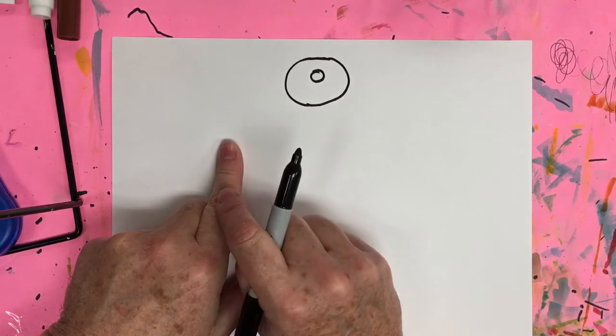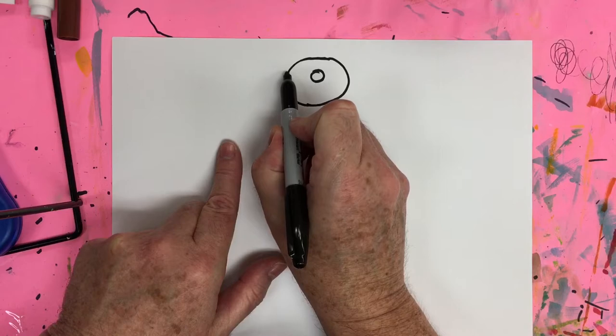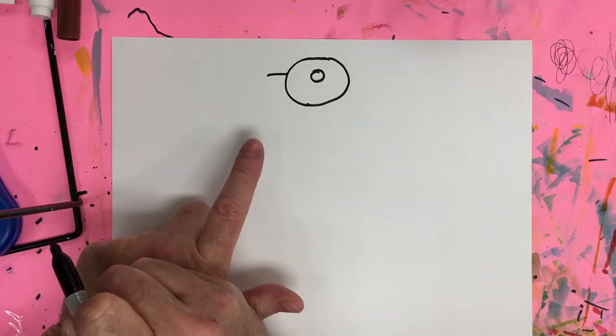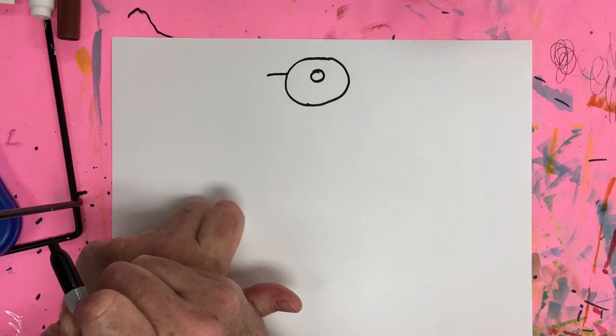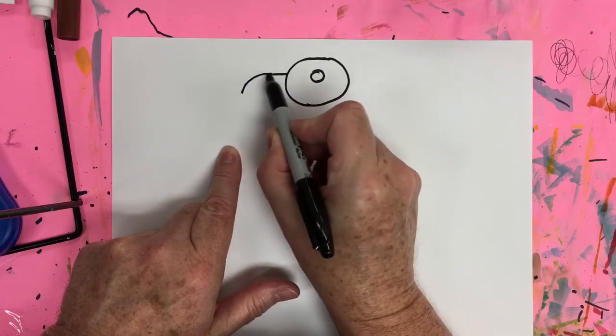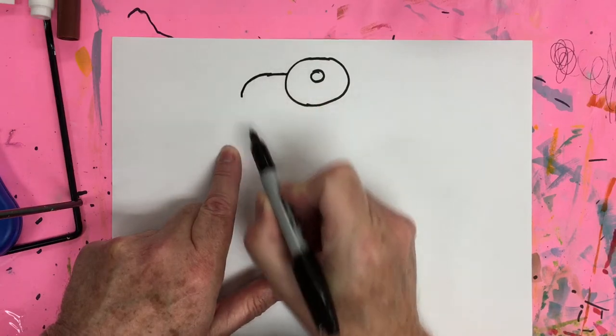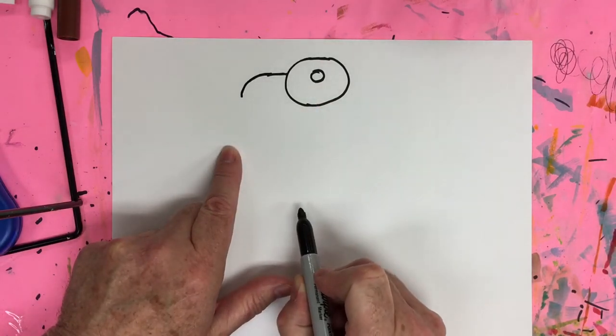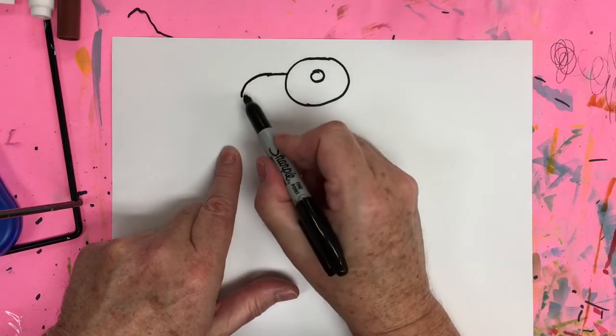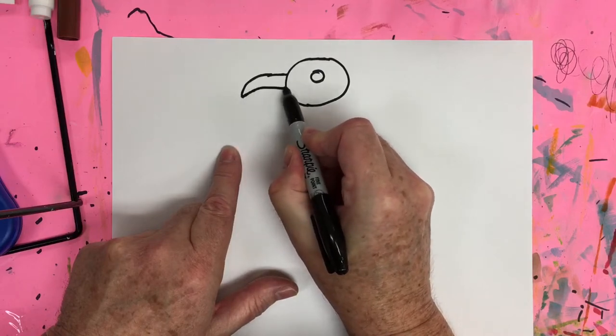Now we're going to do the Thunderbird beak. We're going to come to this edge of the circle and come out straight, just a short line. They say that the Thunderbird is in the likeness of an eagle, one of the greatest birds. So I'm coming down like an eagle beak, a sharp beak, coming out and slowly down. The Thunderbird symbol is just made with simple geometric shapes and lines. Now I'm coming up slightly and right to the head.